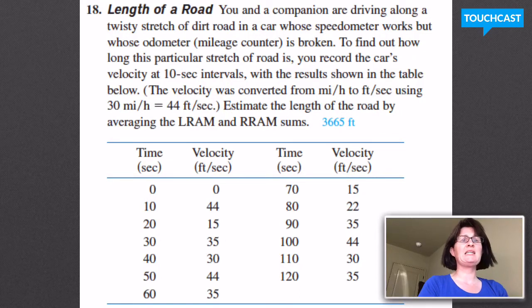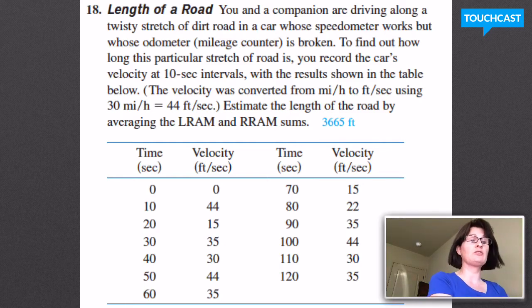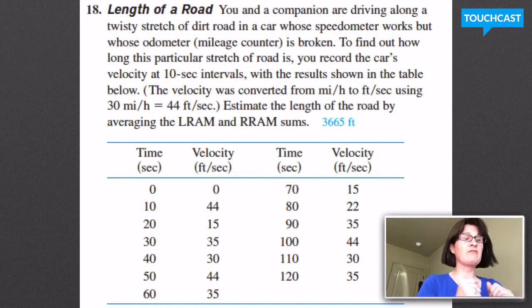Here's a problem for your books, number 18. You're driving down a road and your speedometer works but your odometer doesn't work. So you know how fast you're going but you don't have something keeping track of how far you've gone.